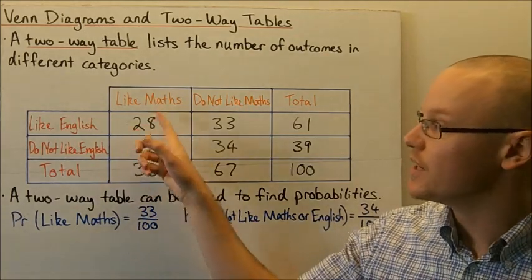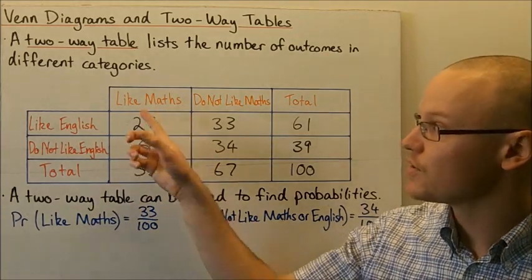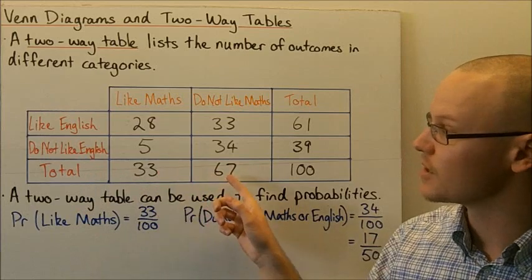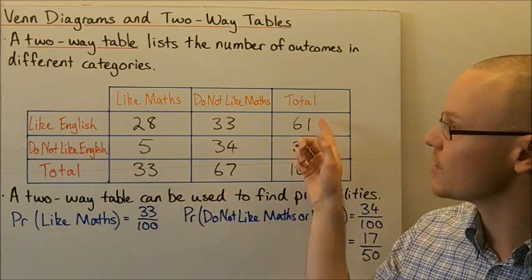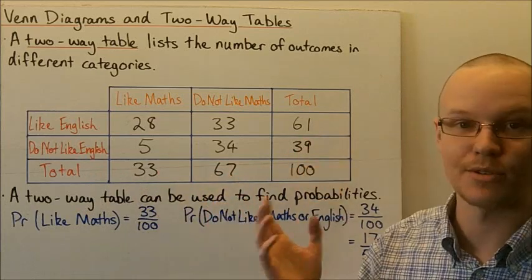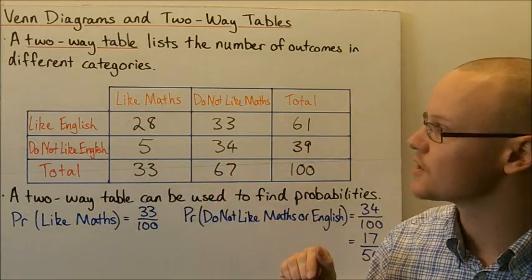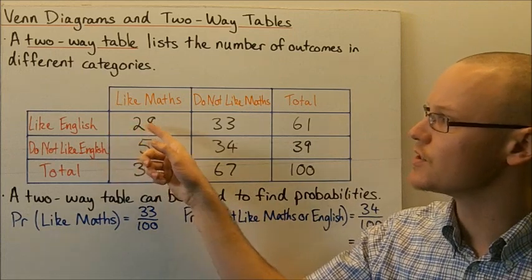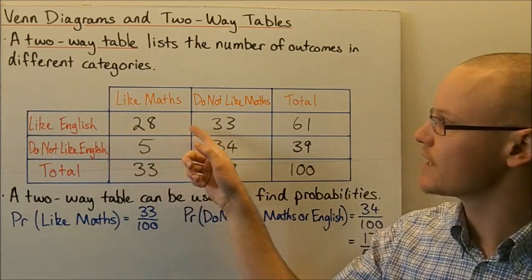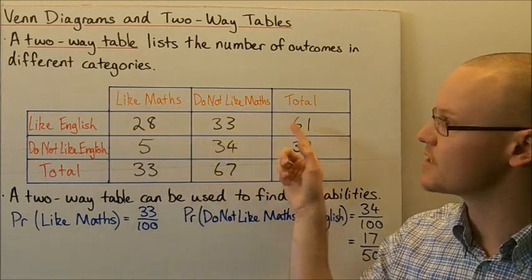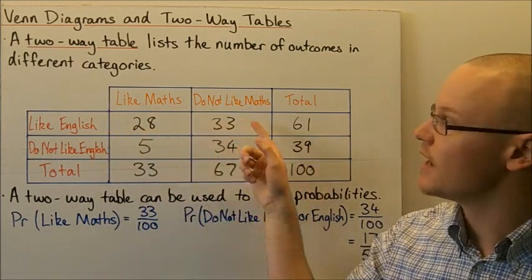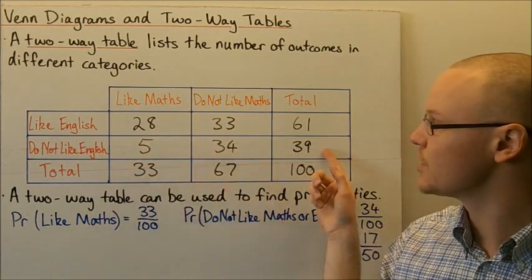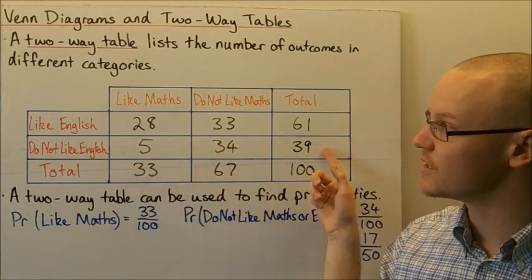The total of each of the columns is at the bottom, and the total of each of the rows is at the side. The total of students that like English is 61, and the total of students who do not like English is 39.